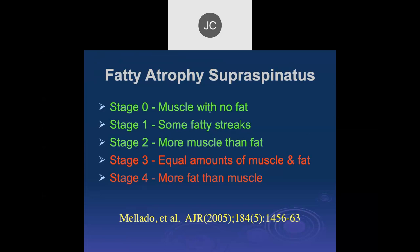The staging system for fatty atrophy: Stage 0 is no fat; Stage 1 is a few fatty streaks; Stage 2 is more muscle than fat but a lot of fat; Stage 3 is equal amounts of fat and muscle; Stage 4 is more fat than muscle. According to the original paper, Stage 3 or 4 means the patient is generally not a surgical candidate, while Stage 0-2 indicates they are. More recent papers, however, have found that the amount of fat within the muscle does not correlate well with surgical candidacy.